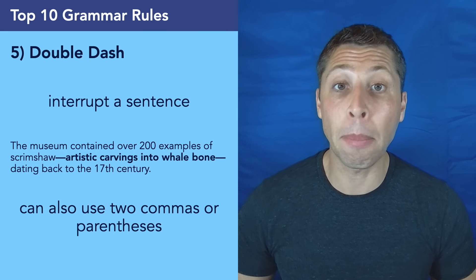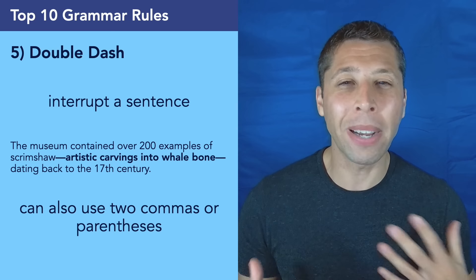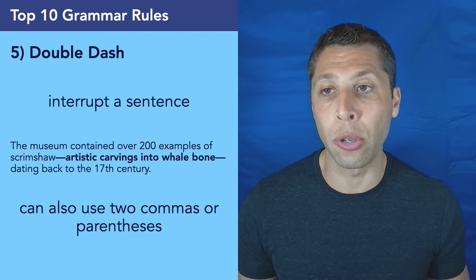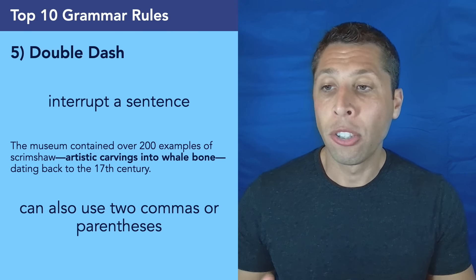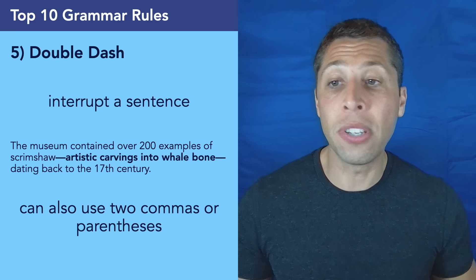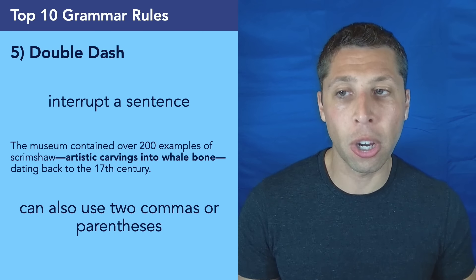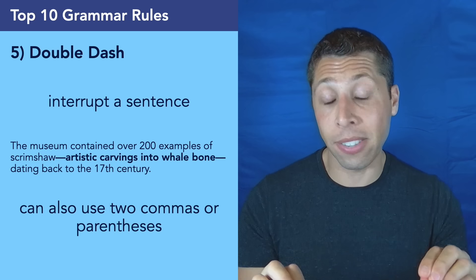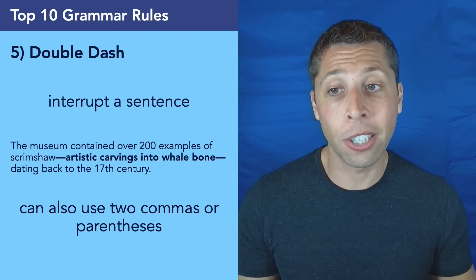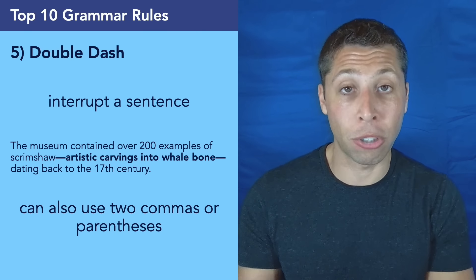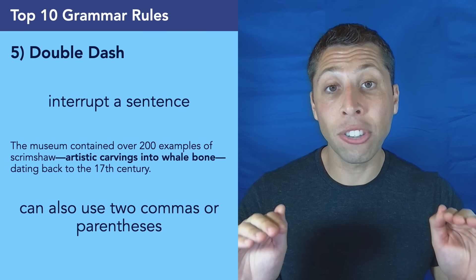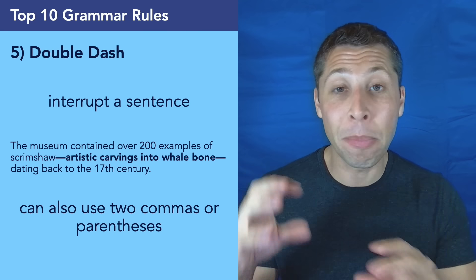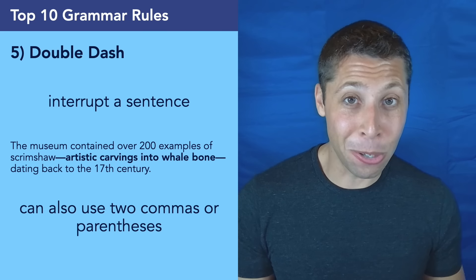Number five is about the double dash. Another punctuation mark that you might not use very often in your own writing, but is very easy to use. It behaves a lot like a comma. So in this case, we have a sentence. The museum contained over 200 examples of scrimshaw dating back to the 17th century. And we're using two dashes to insert this extra piece into the middle, artistic carvings into whalebone. That's basically just a description of what scrimshaw is. So the two dashes indicate where that extra piece begins and ends.